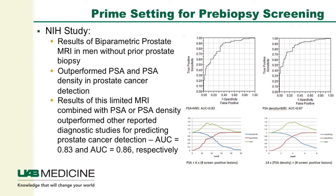There's an NIH study that both Dr. Nix and I were involved in, which looked at the results of a biparametric prostate MRI in men without any prior biopsies of the prostate. The biparametric prostate MRI incorporated T2-weighted imaging as well as diffusion-weighted imaging, obviating the need for contrast administration and MR spectroscopy. The results of the biparametric prostate MRI in these patients outperformed PSA as well as PSA density in prostate cancer detection. Results of this limited time-efficient MRI combined with PSA or PSA density outperformed other reported diagnostic studies, with areas under the curves of 0.83 and 0.86 respectively.